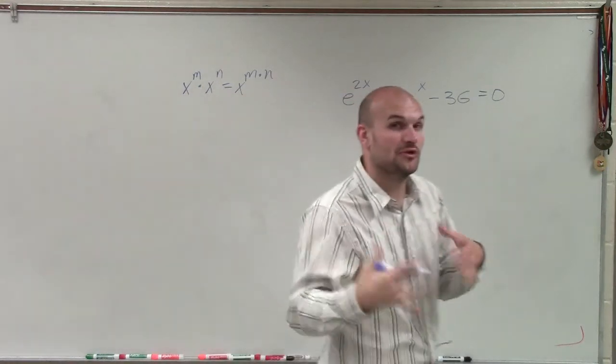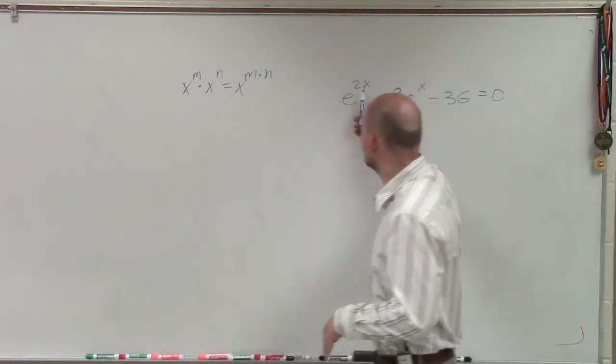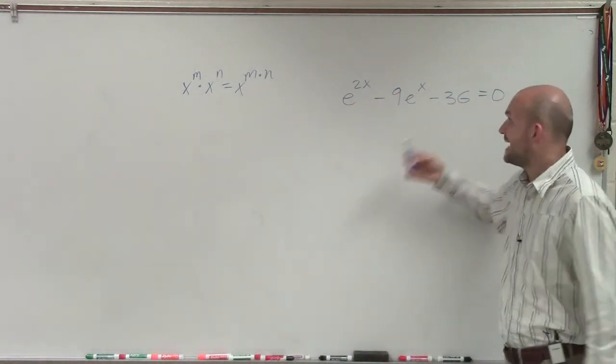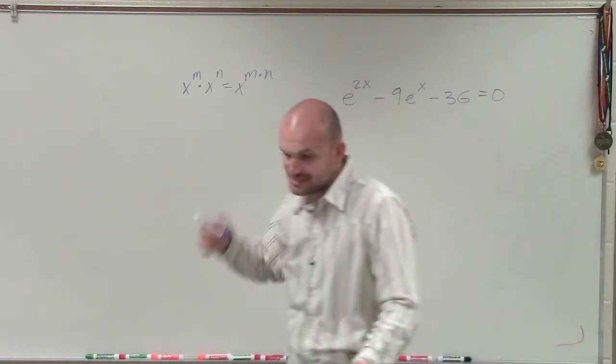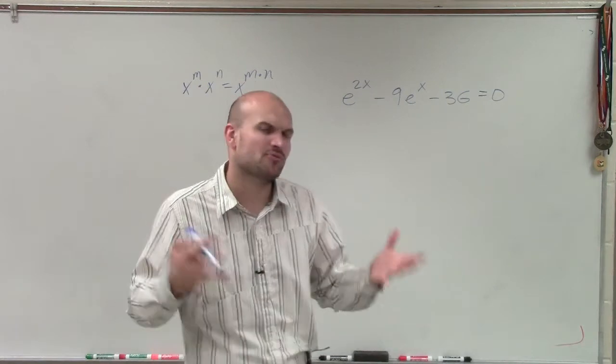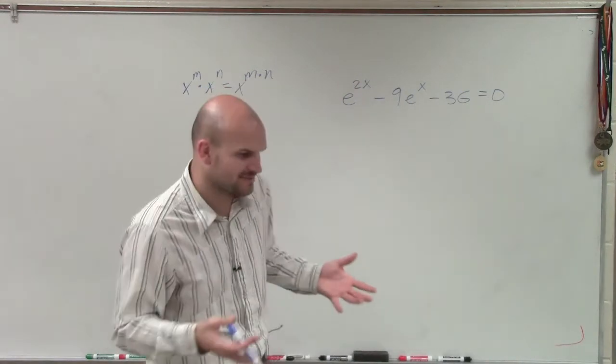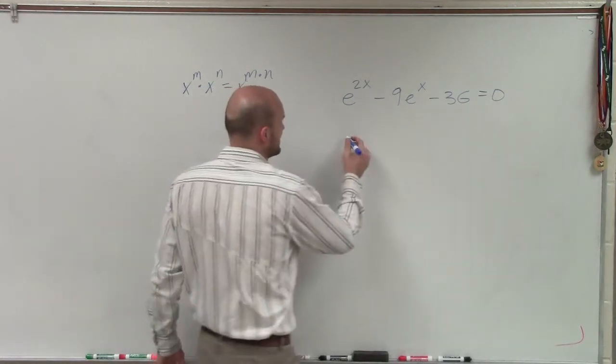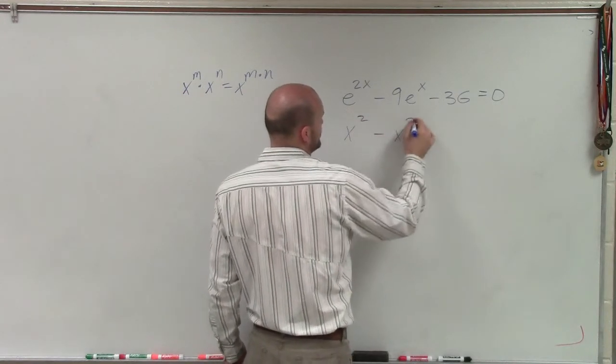And the other thing we remember is we have multiple x's, right? Not just an x in one term, but an x in two terms. And now, since they're not like terms, we can't combine them. But I need to be able to determine, what did we use when we had terms that had the same bases, like x squared minus x cubed?